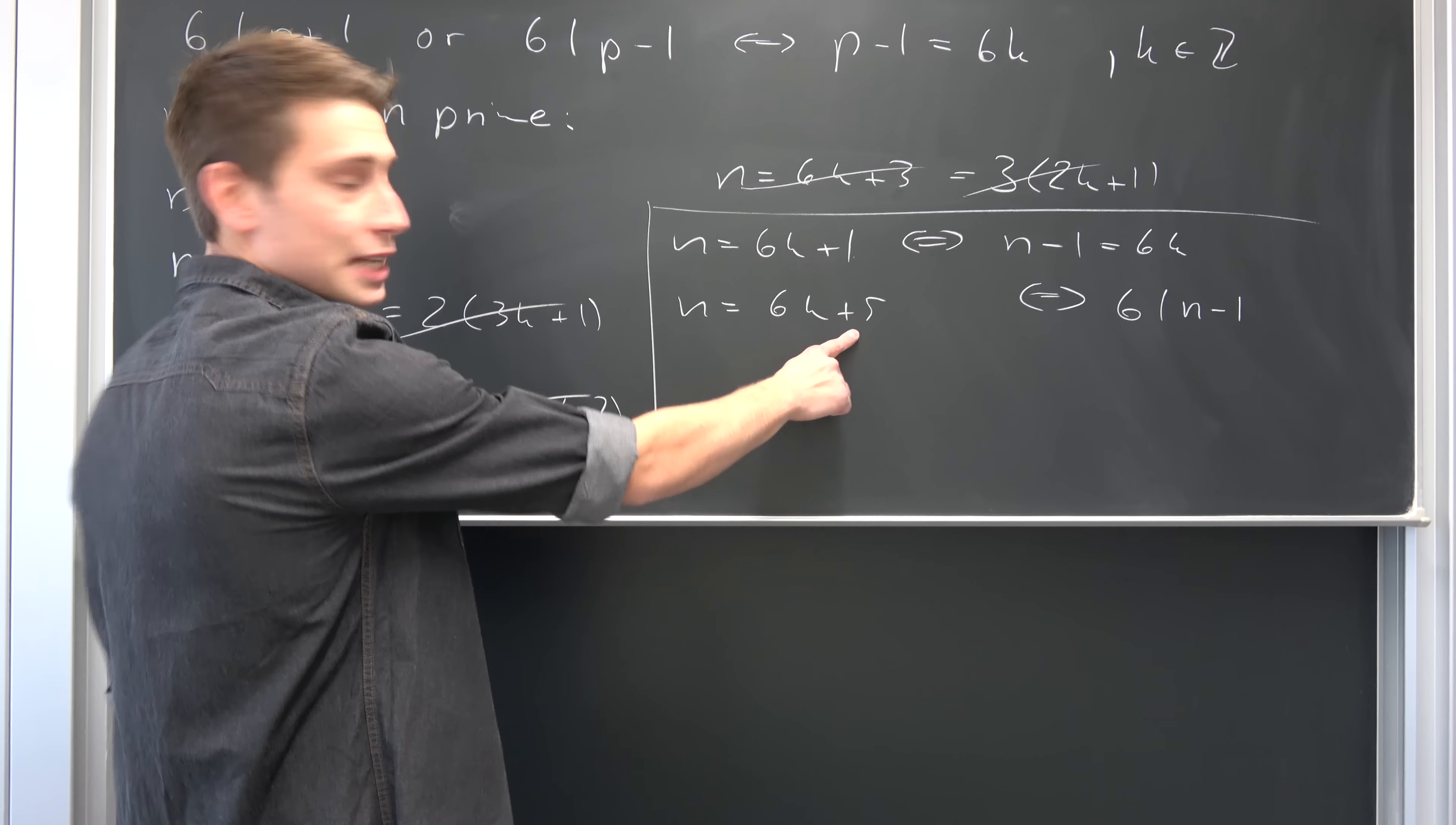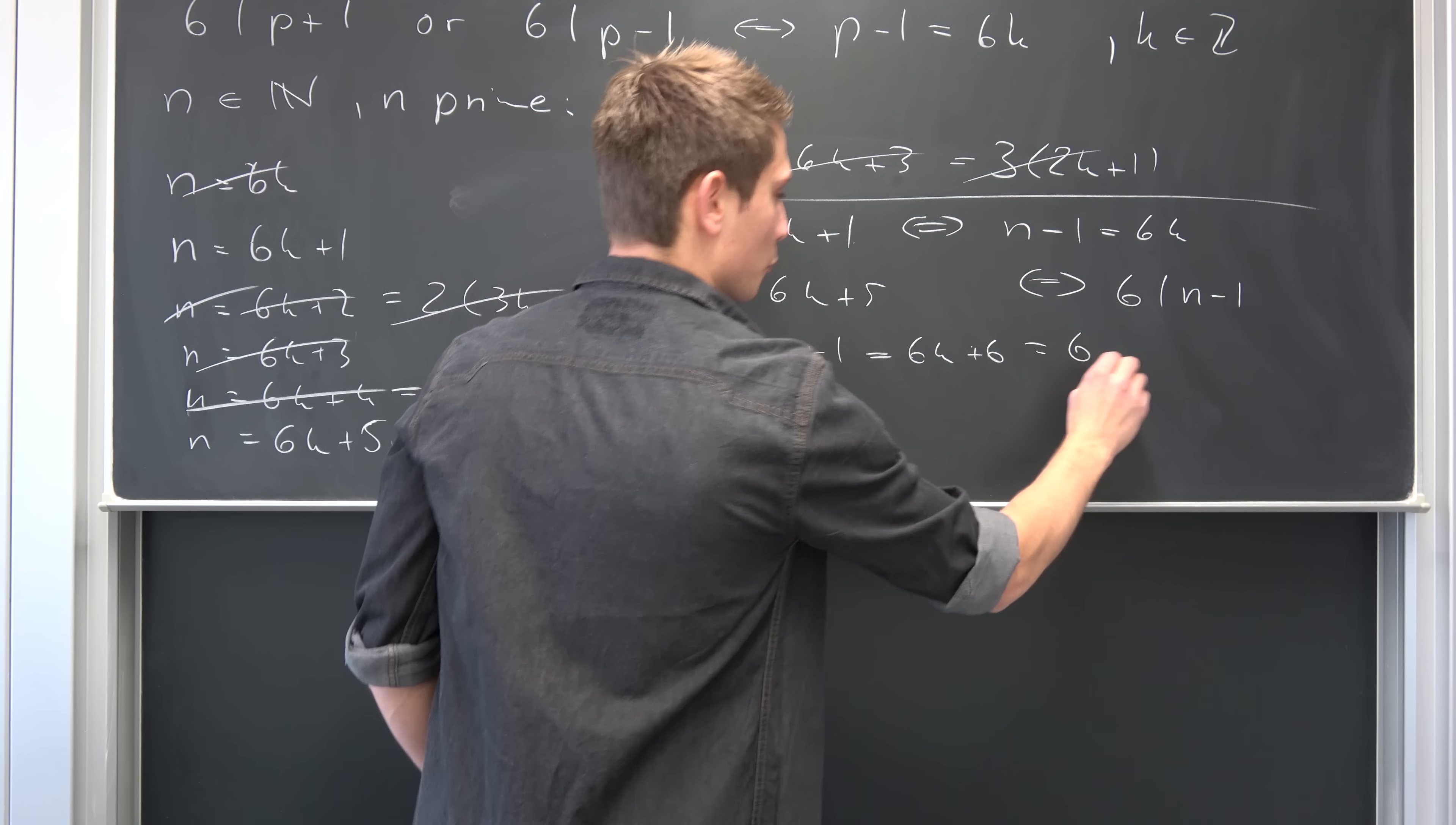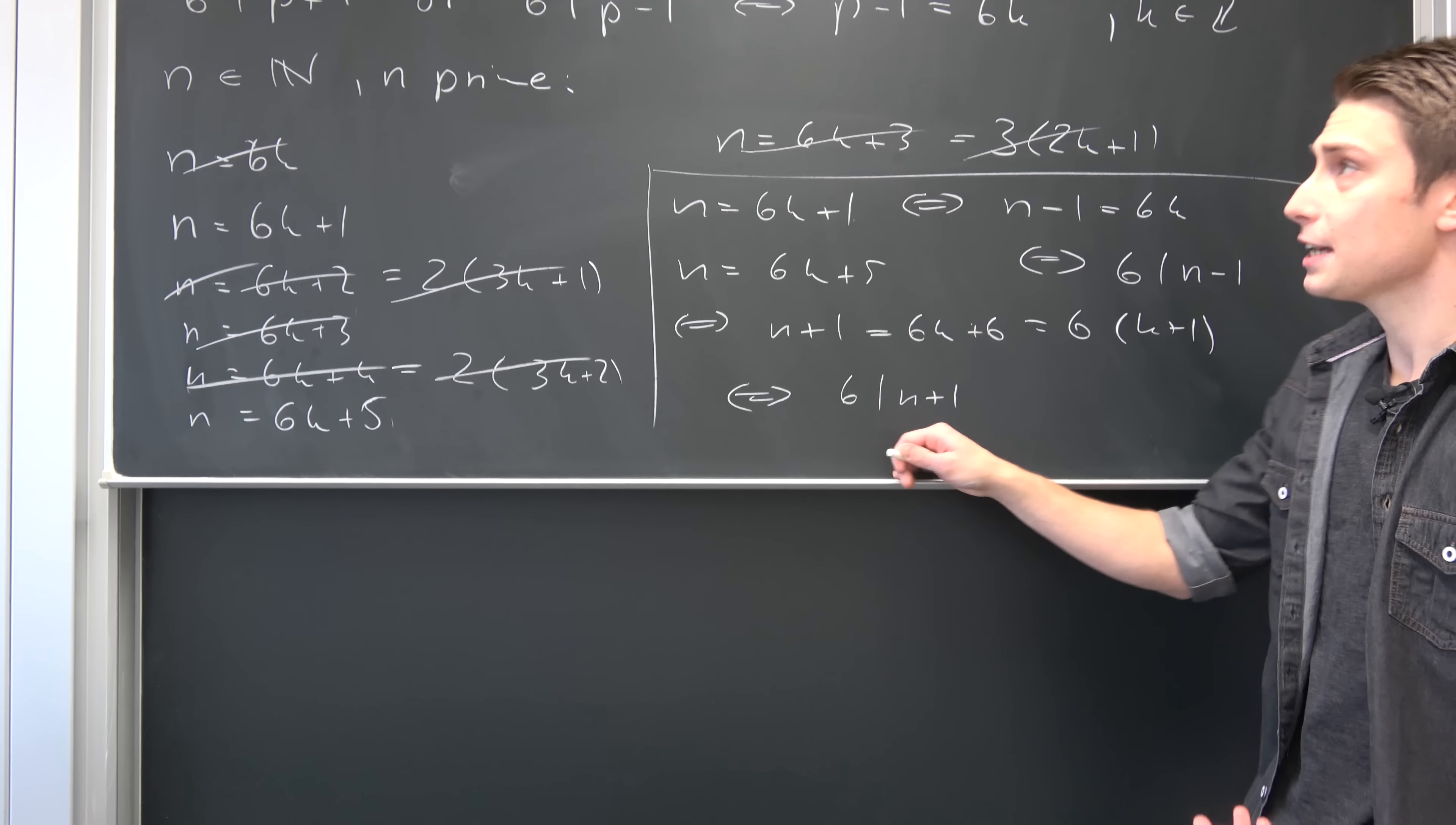Same thing here. Why not add 1 on both sides? That means n plus 1 is now 6k plus 6, because 5 plus 1 is 6. Now we can factor out the 6 on both terms, so we have 6 times (k plus 1). k plus 1 is just an element of the integers. Once again, they are closed under addition, meaning overall that 6 divides n plus 1, where n is once again our p.